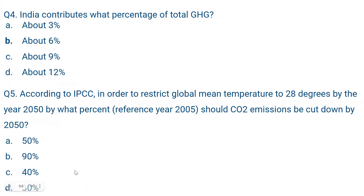Question number four: India contributes what percentage of total greenhouse gases? This is a factual question — the answer is about 6 percent. You can verify this fact: India contributes approximately 6% of greenhouse gas emissions.